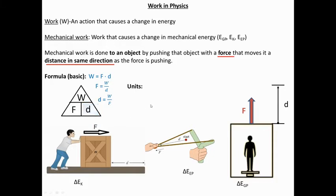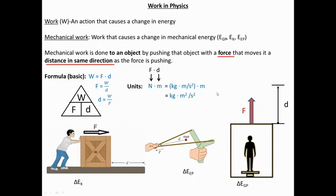As for the units, based on the equation force times distance, we take the units for force and the units for distance and multiply them together. Force is measured in newtons and distance in meters, so technically work can be measured in newton meters. A newton breaks down into kilograms times meters per second squared, and multiplying by meters gives kilograms times meters squared over seconds squared — which is what we abbreviate as a joule. So work can be measured in joules or newton meters; a newton meter is the same as a joule.